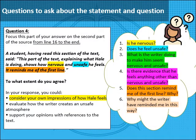So let's look at this together. I'm being asked to what extent I agree with the student's statement — so what is there to agree or disagree with? A student having read this section of the text said: 'This part of the text explaining what Hale is doing shows how nervous and unsafe he feels.' Well, is he nervous? Does he feel unsafe? And as in the second bullet point, what is the writer doing to make him seem nervous and unsafe? Is there evidence that he feels anything other than nervous and unsafe? It reminds me of the first line — does this section remind me of the first line? Why? Why might the writer have reminded me of the first line in this way?